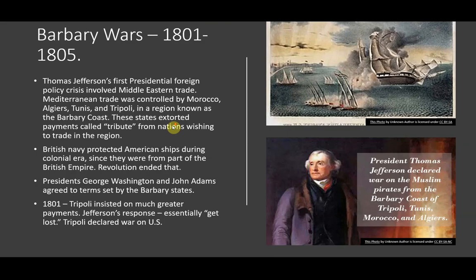The Barbary Wars, 1801-1805. Thomas Jefferson's first presidential foreign policy crisis involved the Middle Eastern trade. The Mediterranean trade was controlled by Morocco, Algiers, Tunis, and Tripoli in a region known as the Barbary Coast. These states extorted payments called tribute from nations wishing to trade in the region.